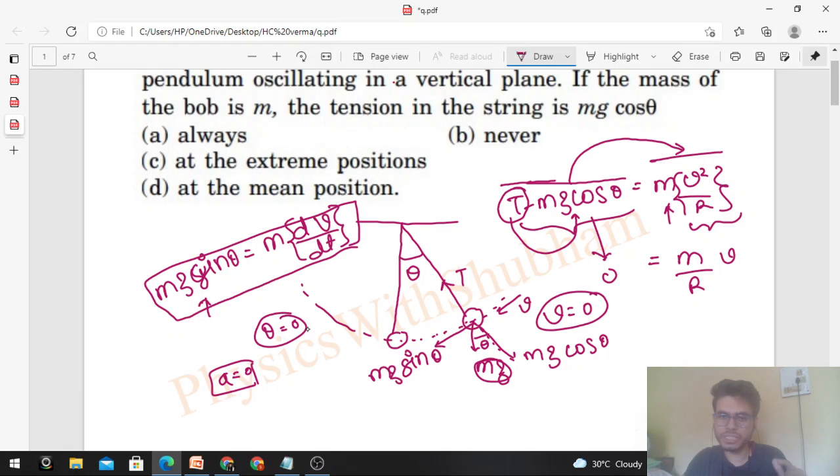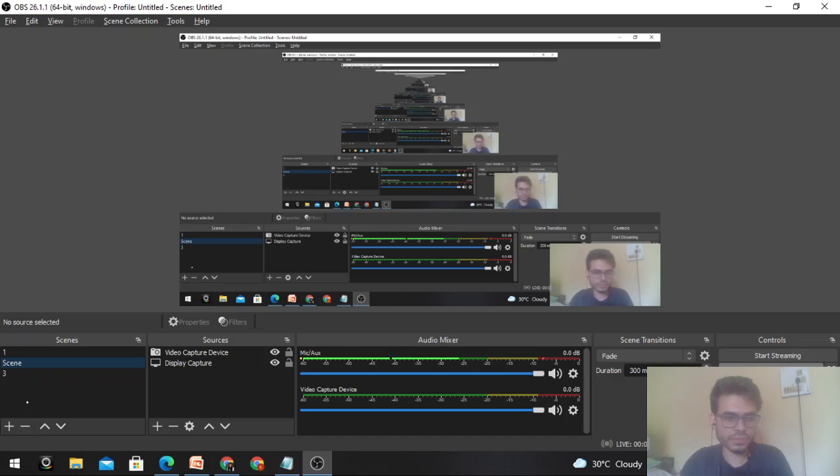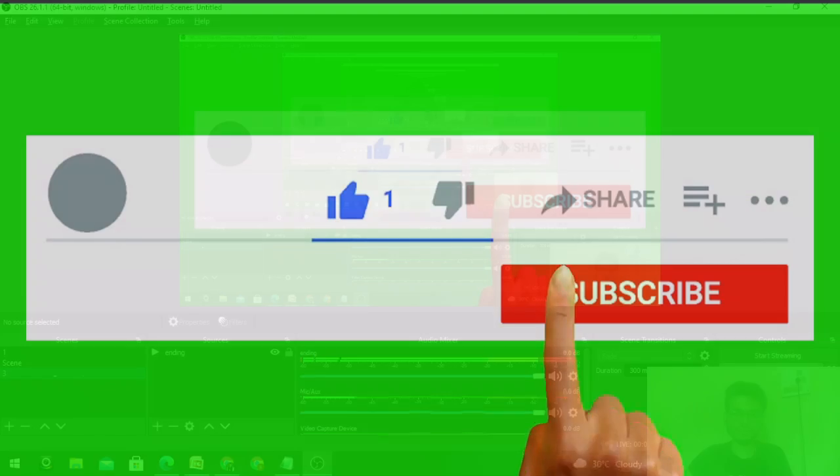zero? At the extreme position. At the extreme position, the tension value you'll get is mg cos θ. Okay, I hope it's clear. Let me know if you have any confusion; we can discuss further in the Telegram. Okay guys, keep working hard, best of luck, bye!